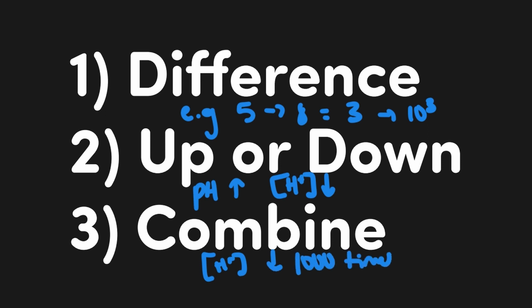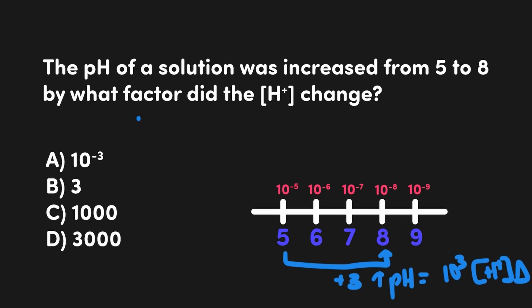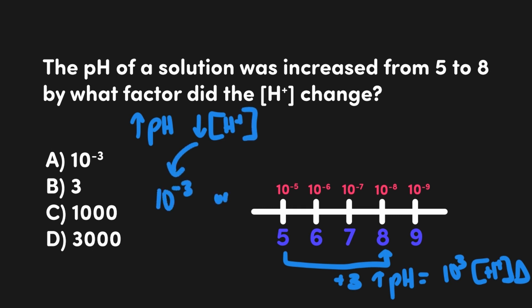Let's look at some practice problems. The first example: the pH of a solution was increased from 5 to 8 — by what factor did the H+ concentration change? Step one: the difference is 3 units, which converts to 3 factors of 10. Step two: since the p-scale went up, the H+ concentration is going to go down. Step three: combining these, we need a 3 factor-of-10 difference, so we're considering either 10 to the negative 3 or 10 to the 3, which is 1000. Since the H+ concentration went down, we need a negative exponent to represent that factor change, making A the correct answer.